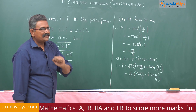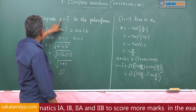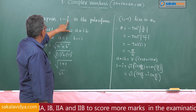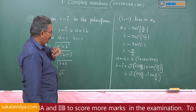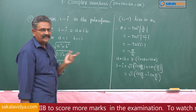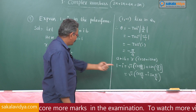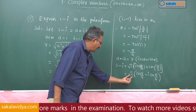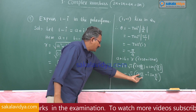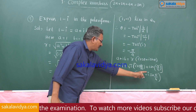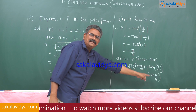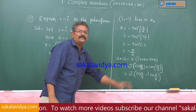You can also expect the polar form of 1 plus i — its conjugate — which is root 2 times (cos pi by 4 plus i sin pi by 4).